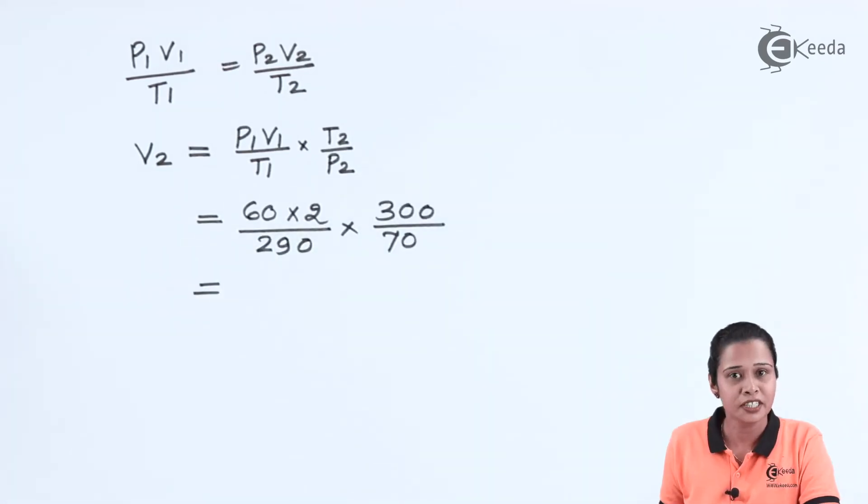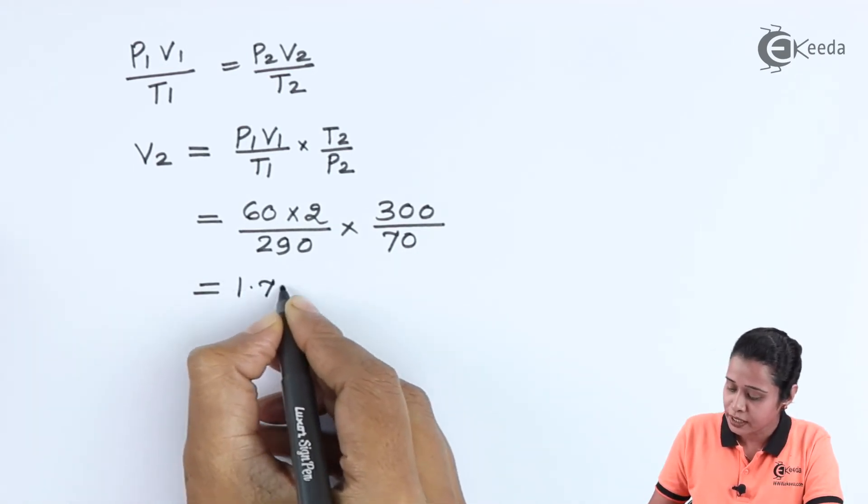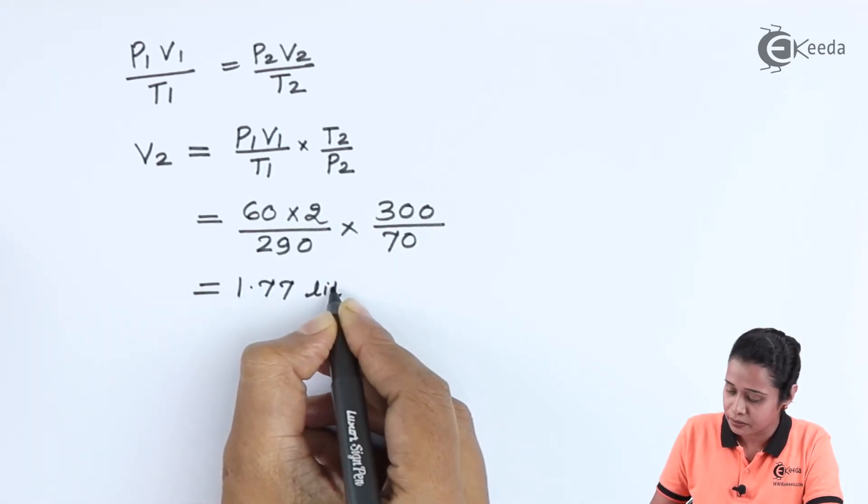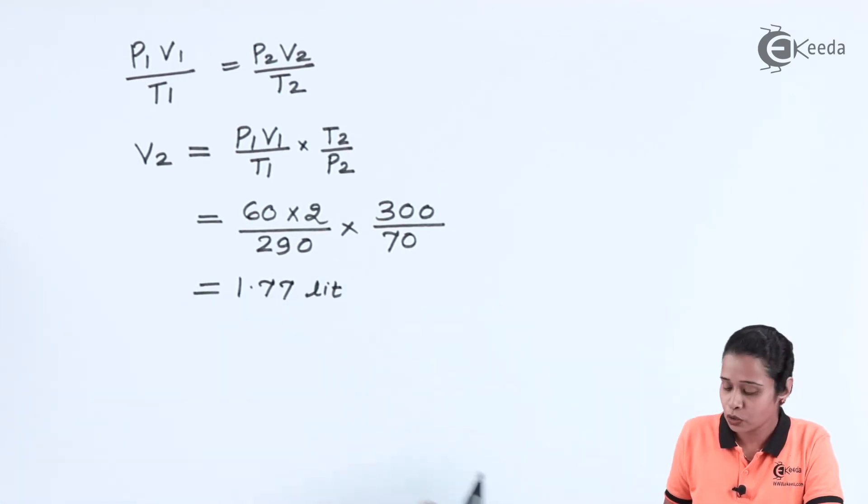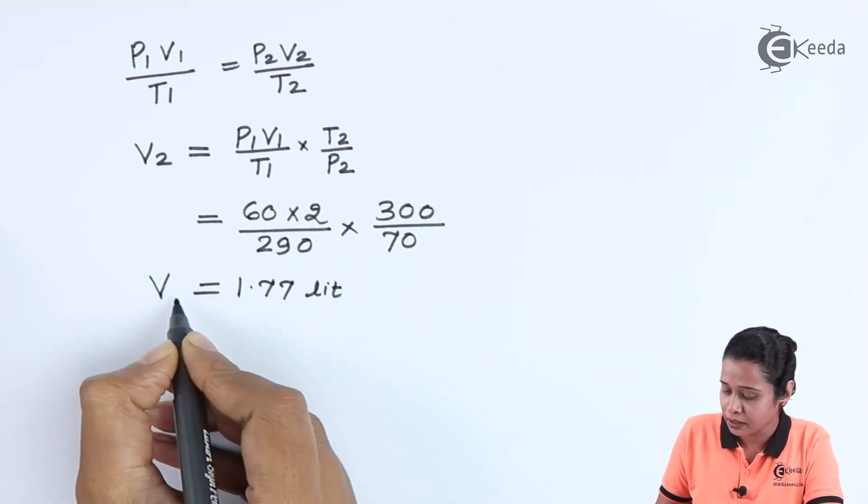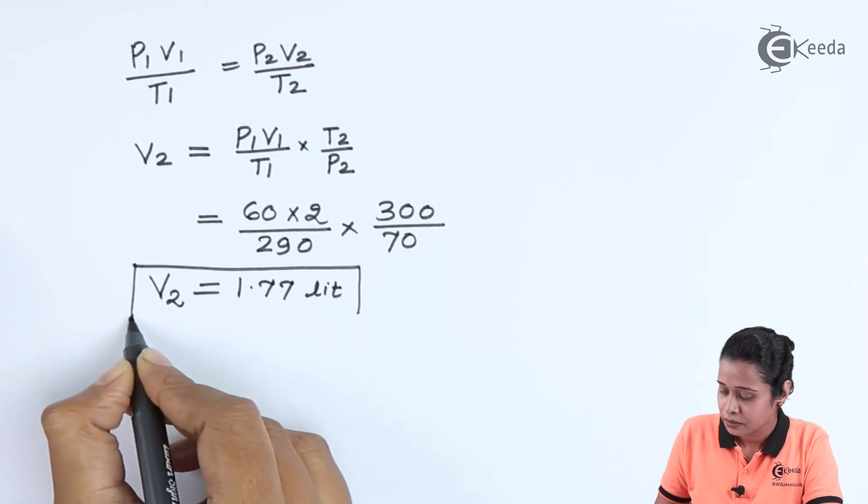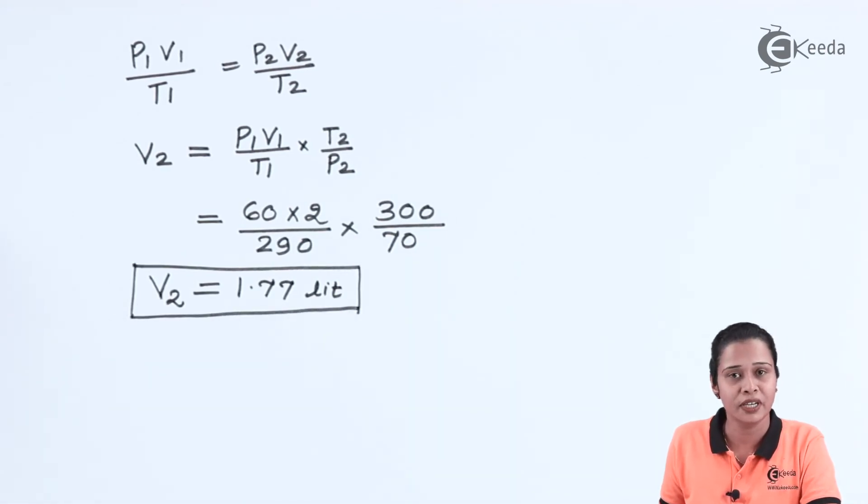After substituting values, we have 1.77 liters. Hence, the volume of the gas will be 1.77 liters.